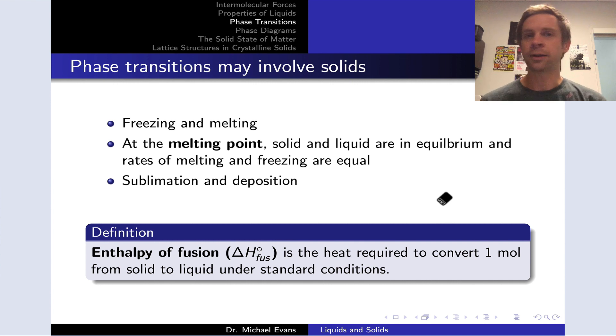First, let's start and just note that phase transitions may involve solids as the starting point or the end point, the reactant or the product. Two phase transitions involving solids are freezing, in which a liquid goes to the solid phase, and melting, in which a solid goes to the liquid phase. At the melting point, the solid and liquid phases have equal stability, they are in equilibrium, and the rates of melting and freezing are equal.